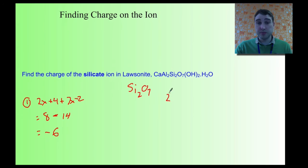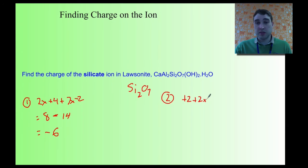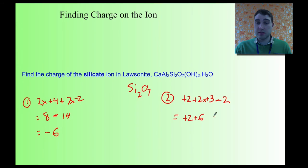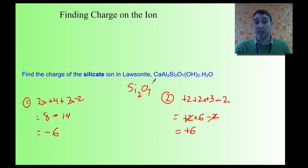We'll try it the second way. Looking at the things out in front: I've got a calcium, which has a charge of plus two. We've got two aluminiums — each aluminium is plus three, so that's plus six. And there are two hydroxide ions at the end, which have a charge of minus two. So: plus two, plus six, minus two — that gives a charge of plus six. That means the charge on the silicate ion has to be minus six. Both ways confirm the same result.